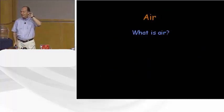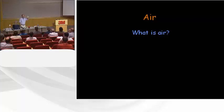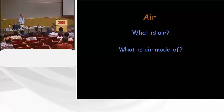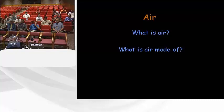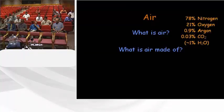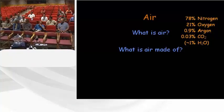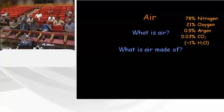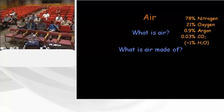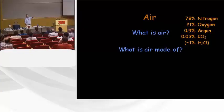Before we talk about vacuum, we need to talk a little bit about air, because vacuum is the absence of air at some level. So what is air? It's a mixture of gases — nitrogen, oxygen, water vapor. There's the actual standard atmosphere composition. The water vapor varies; yesterday it was really high and it's supposed to be low and delightful today.